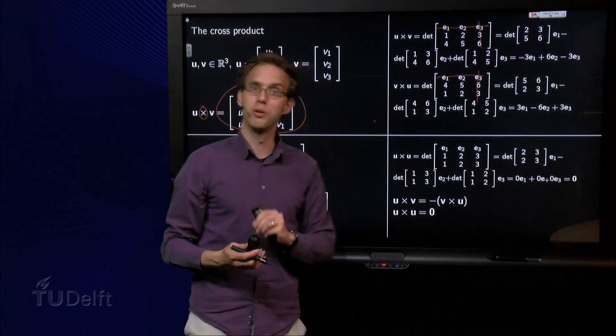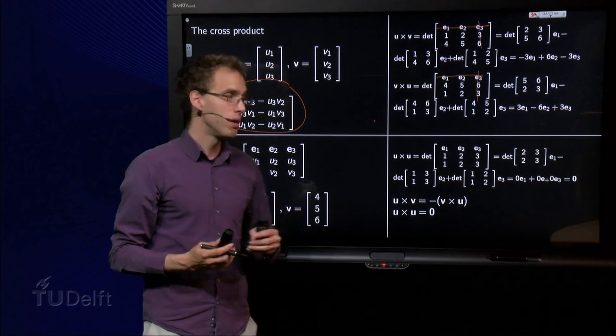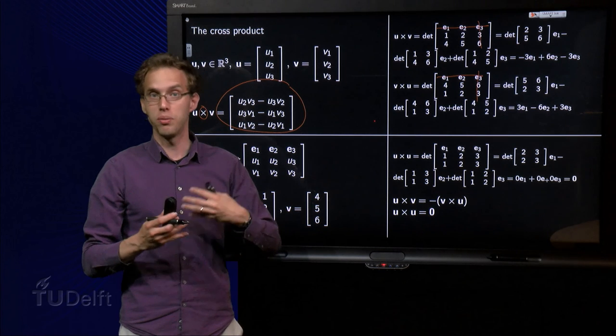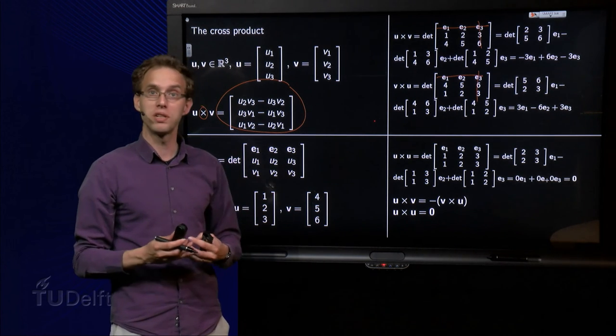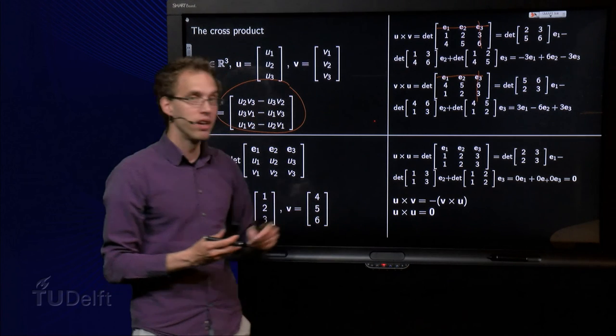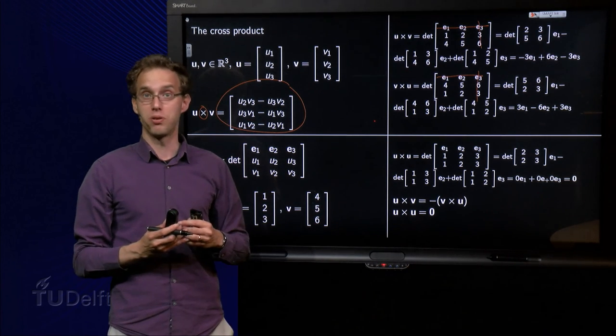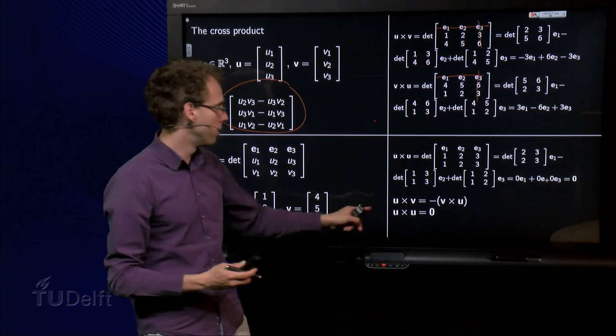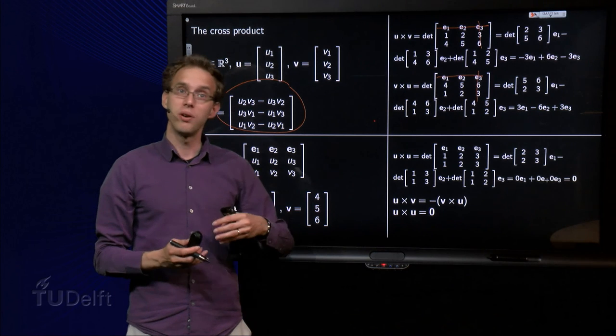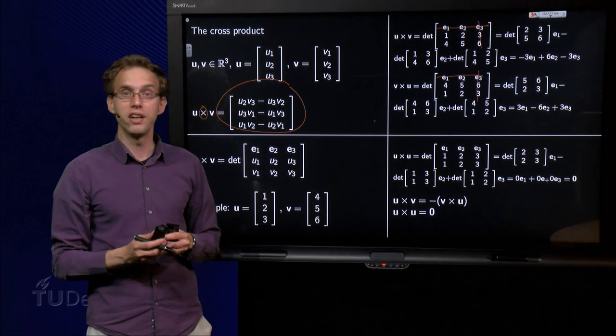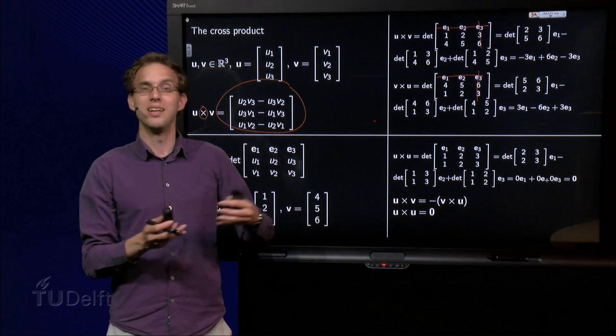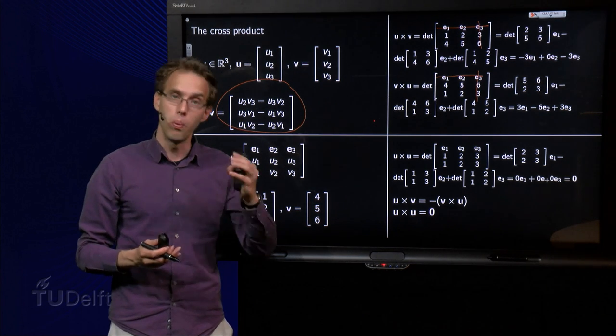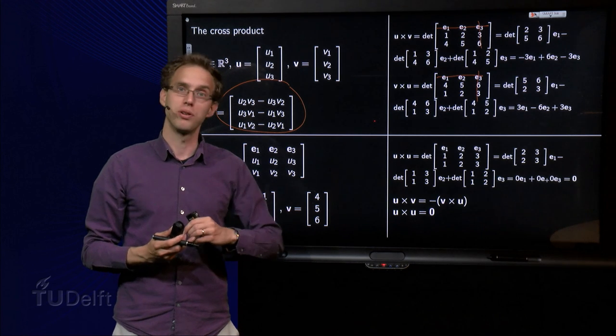That won't surprise you if you know something from determinants, because now we have a determinant with two equal rows, and a determinant with two equal rows always yields zero. So we know how to compute cross products. We found two rules already: u cross v equals minus v cross u, and u cross u is always the zero vector. Now you might wonder, why do you compute the cross product in such an odd way? What are the properties? Well, that will be the subject of some next web lectures.